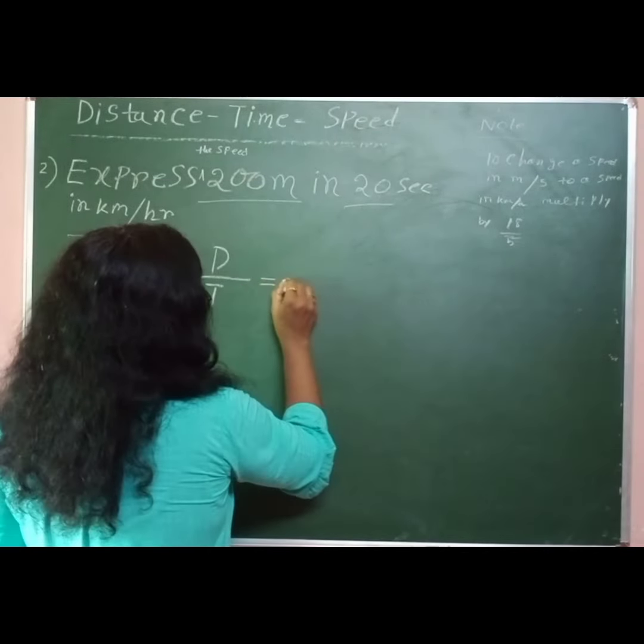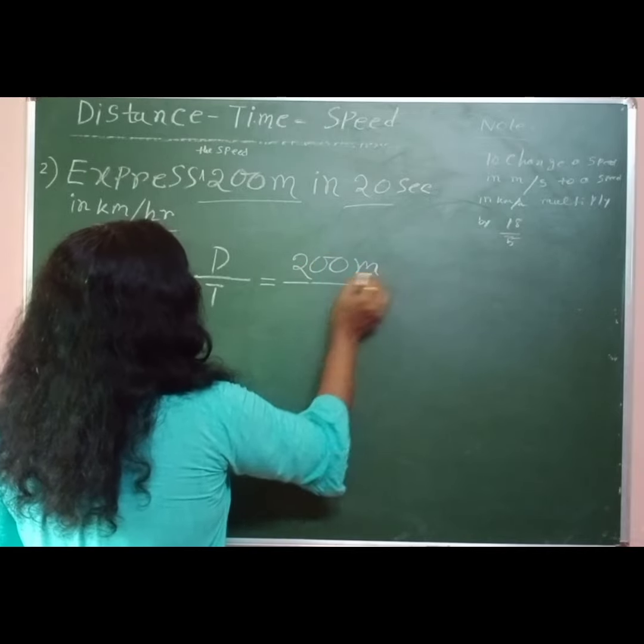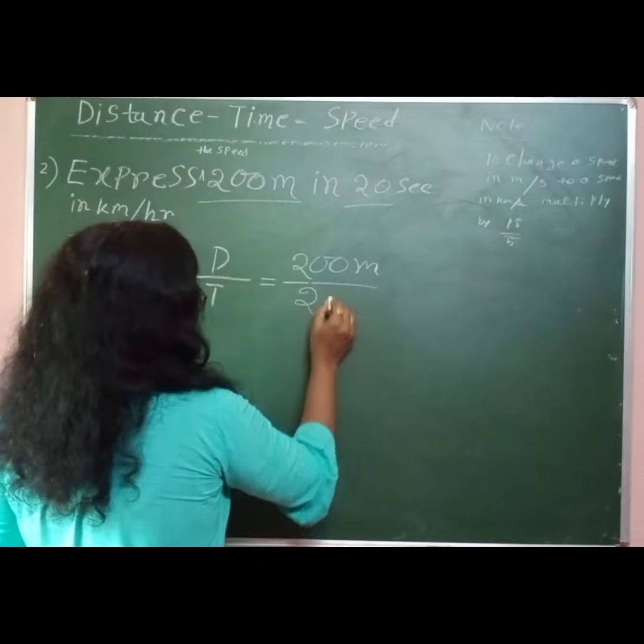So in place of distance we have to write 200 meters and in place of time we have to write 20 seconds.